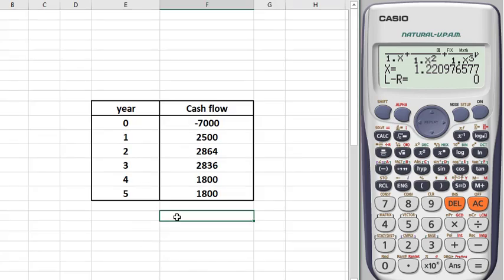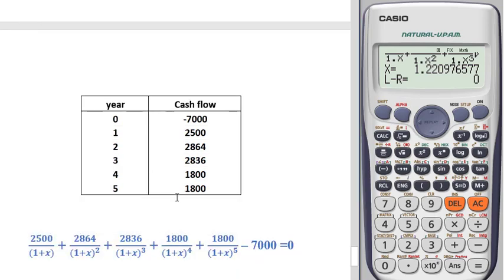If we calculate it in Excel, you can see our result is 22.0976 percent, exact equal to this result. So this is how you can solve this problem of long equation.